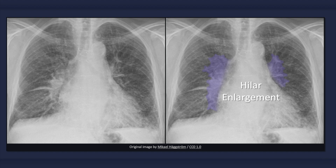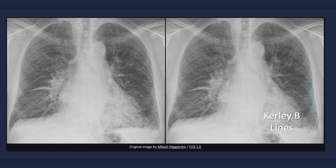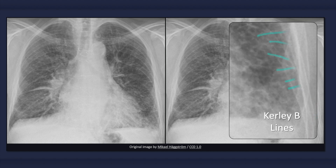The increase in hilar size, as well as the vascular pedicle widening in this x-ray, are due to pulmonary venous congestion. An edematous interstitium is another important feature of congestive heart failure. Three signs of thickened interstitial tissue include Kerley B-lines, peribronchial cuffing, and interlobar fissure thickening. Kerley B-lines are fine linear opacities only 1 to 2 millimeters in width, typically located peripherally in the lower lung fields near the costophrenic angles, extending perpendicularly inwards from the pleura and up to 3 centimeters in length.